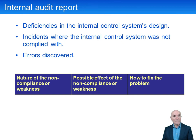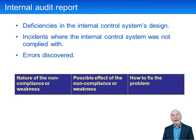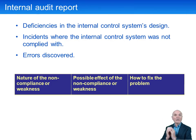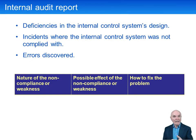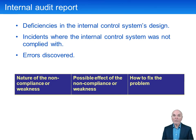The type of report that internal auditors will provide will set out deficiencies in the internal control system, incidents where the internal control system is not being properly complied with, and errors or indeed fraud which have been discovered. Normally the reports have three columns: first, here's the nature of the problem — for example, bank reconciliations are not being done. Second column is really selling this to management — saying if bank reconciliations are not being done, there is a real risk that the cash book begins to diverge from what the bank balance actually is, and we will have inaccurate records in cash. And then finally: how do we fix it? Which is usually very easy once you've discovered the first two — you simply do a reconciliation monthly or weekly or whatever the appropriate frequency is.